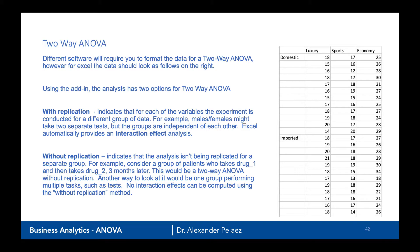With replication indicates that for each of the variables, the experiment is conducted for a different group of data. For example, males and females might take two separate tests, so the groups are independent of each other. Excel can then do what's called an interaction effect analysis, which we'll discuss later. If you have two different independent groups, you will be using the with replication option — this is the one you'll most commonly use in Excel.